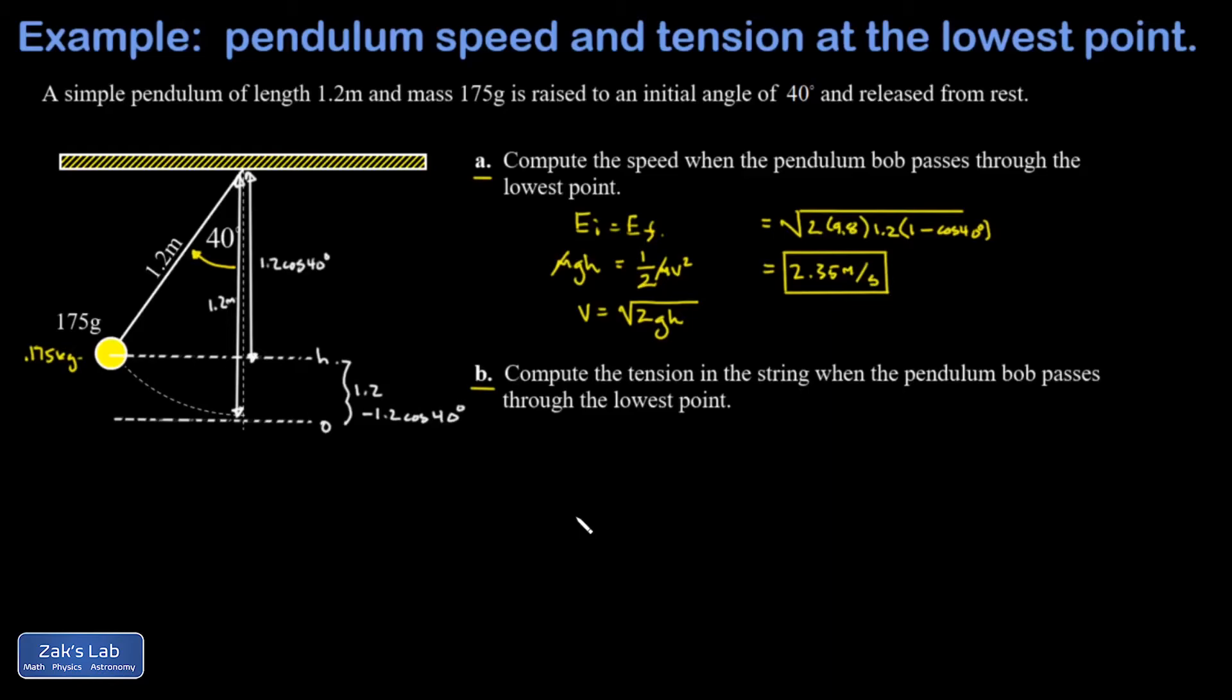In part b we want to get the tension in the string at that lowest point, and so we need to do a force analysis on the pendulum bob at this location. And then we apply what we know about uniform circular motion to answer the question. So there's our pendulum bob. It has a mass of 0.175 kilograms. And I know that this thing is moving to the right at this moment in time at 2.35 meters per second. And that's relevant because the acceleration of this pendulum bob depends on that speed. It's moving on a curved path and we can compute the acceleration using the formula v squared over r.